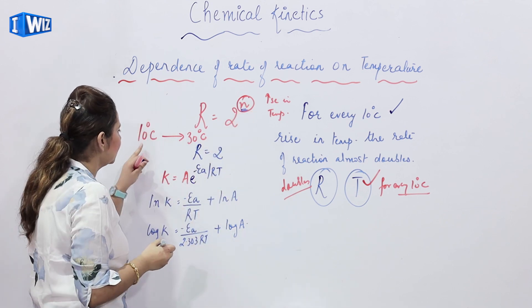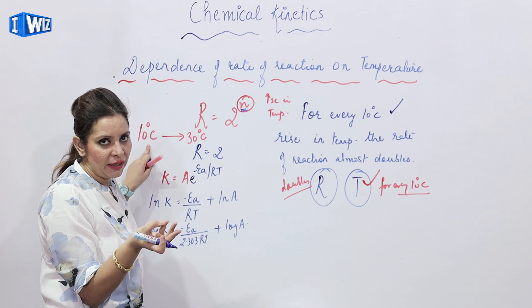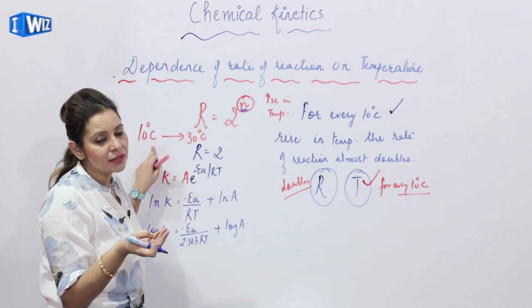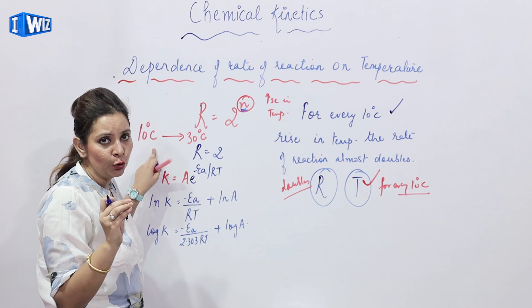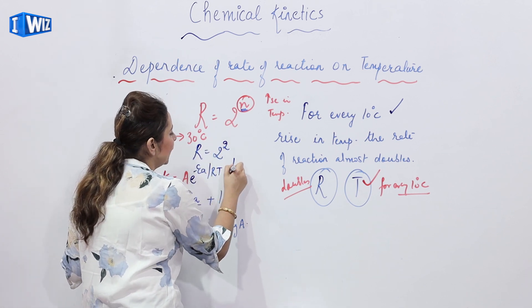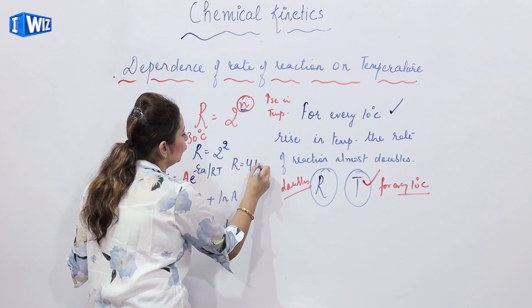N is the number of increase. So 10 to 20, 10 degree, 1 means you can say 10 degree Celsius. 20 to 30 is 20 degree Celsius. So it comes out to be 2. That means it is increasing 2 times. So n is 2. That means rate almost becomes 4 times.